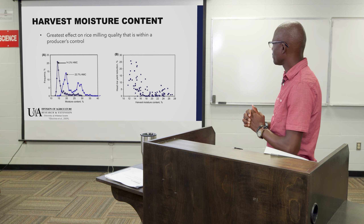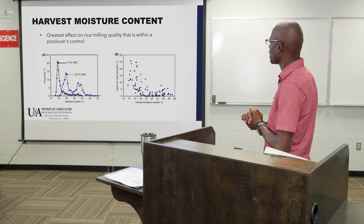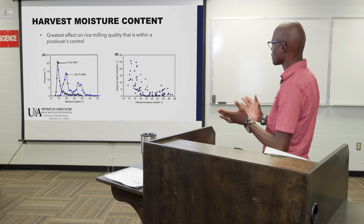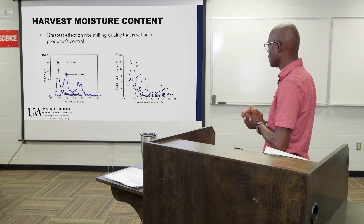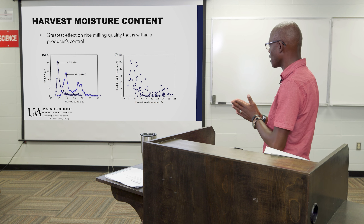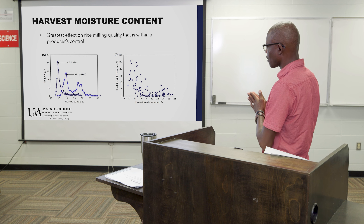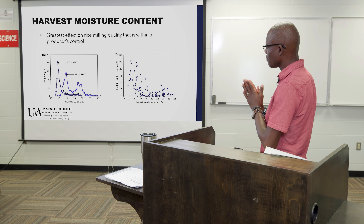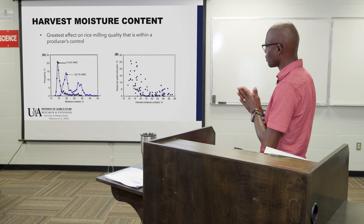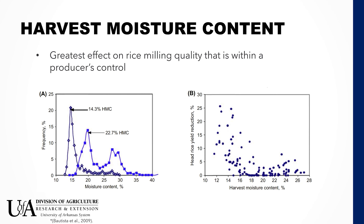The first graph in blue illustrates a case where a rice lot was harvested at 27% moisture content. The x-axis shows the moisture content of individual kernels within that bulk lot, and the y-axis shows the frequency — the number of kernels that correspond to the various moisture contents. 22% is the bulk sample moisture content, but within that bulk sample, the kernels come in with different moisture contents.